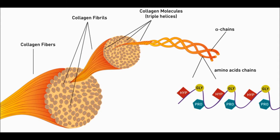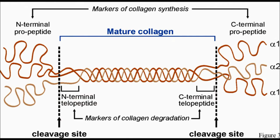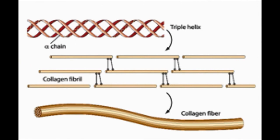Collagen begins as pro-collagen molecules, which are made up of three chains: two pro-A1 chains and one pro-A2 chain. These processed molecules then arrange themselves into a fibril formation. Collagen molecules make cross-links within fibrils, resulting in very strong collagen.